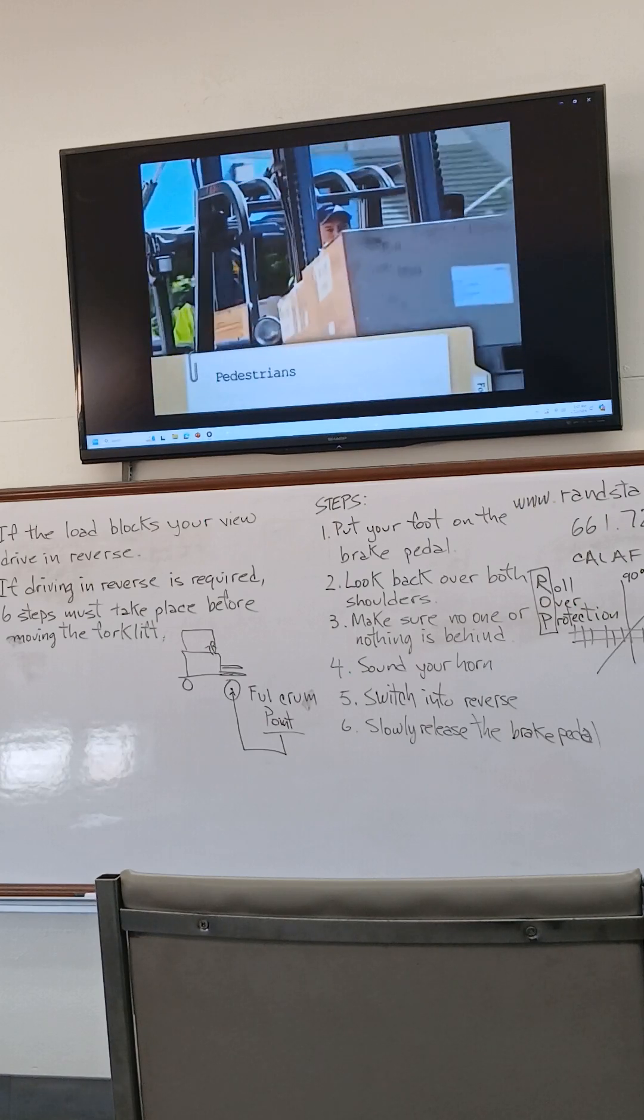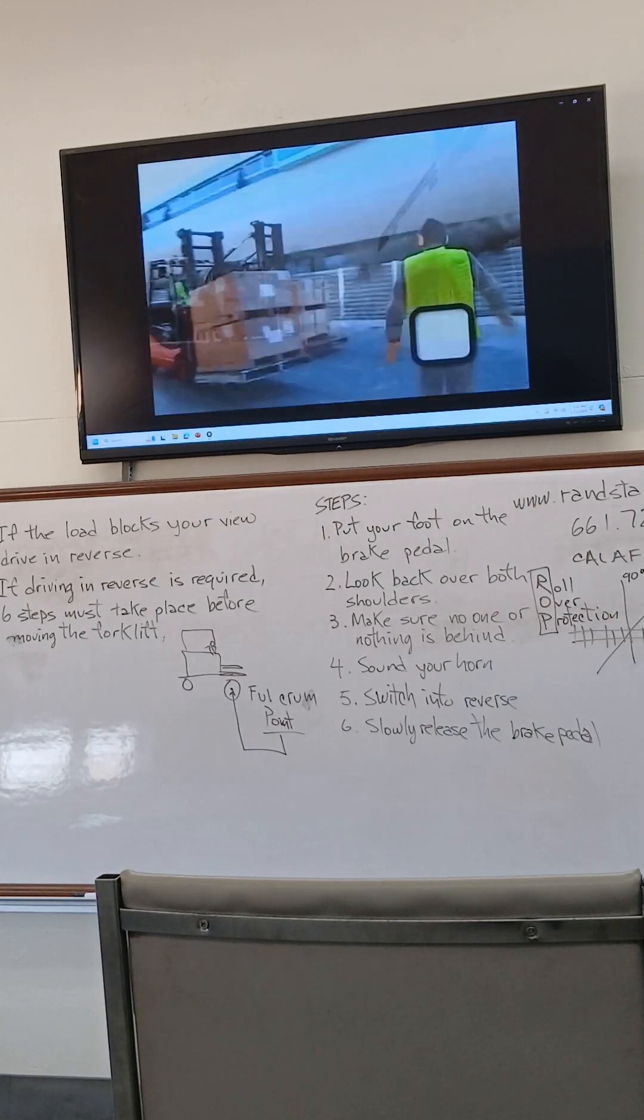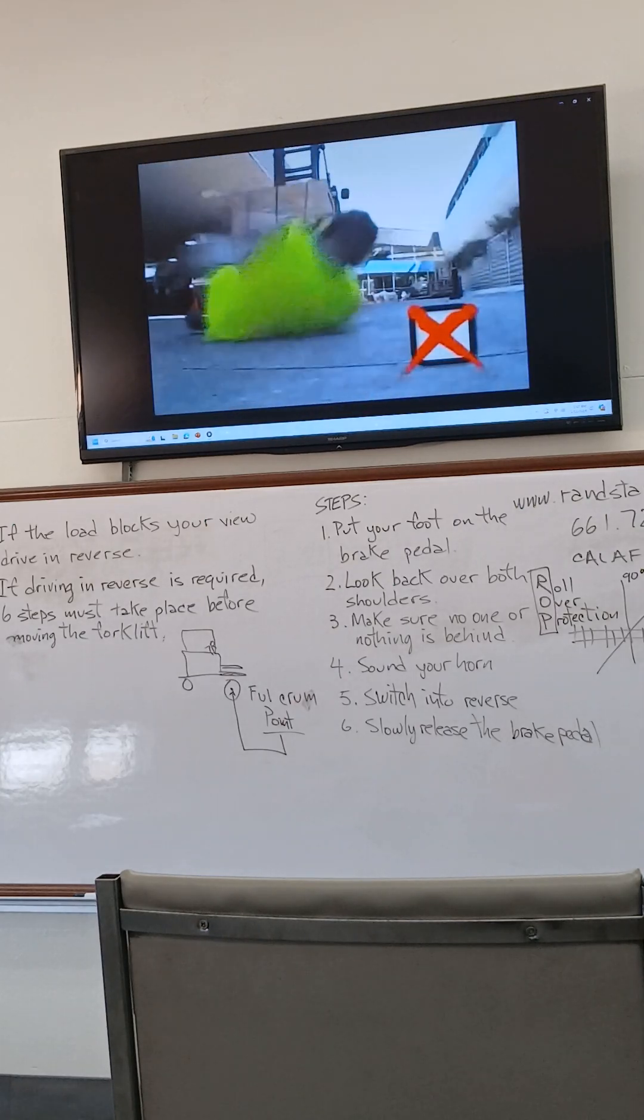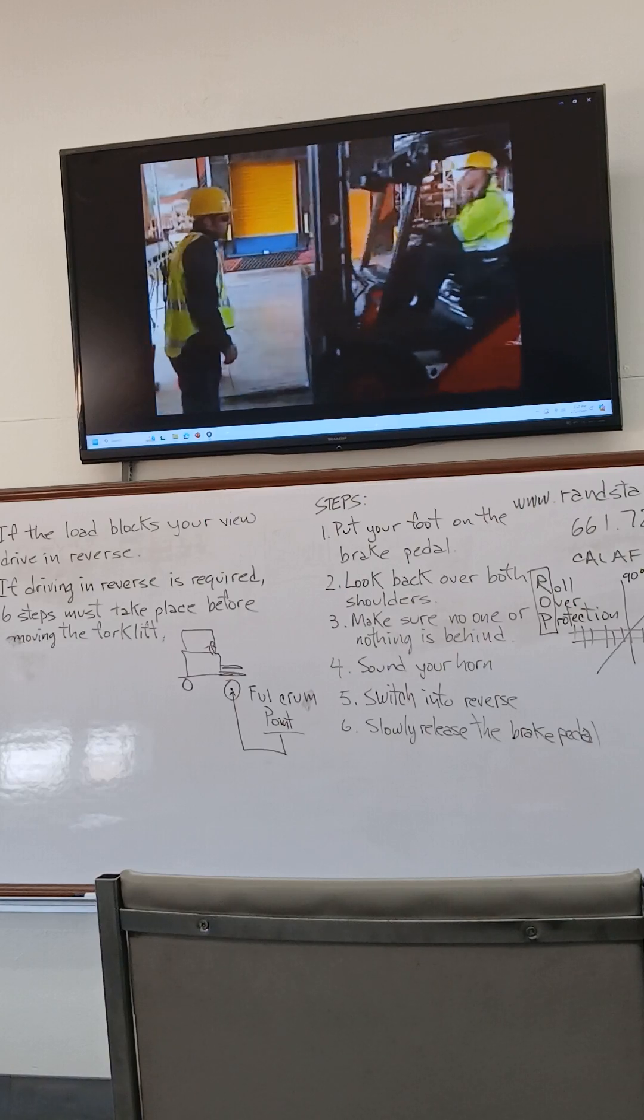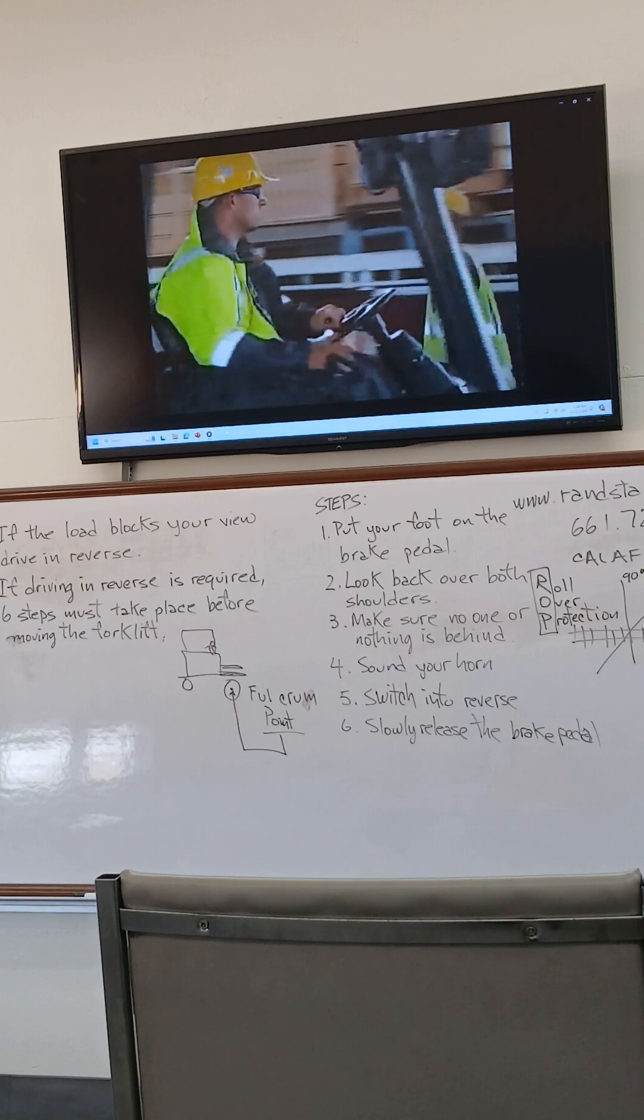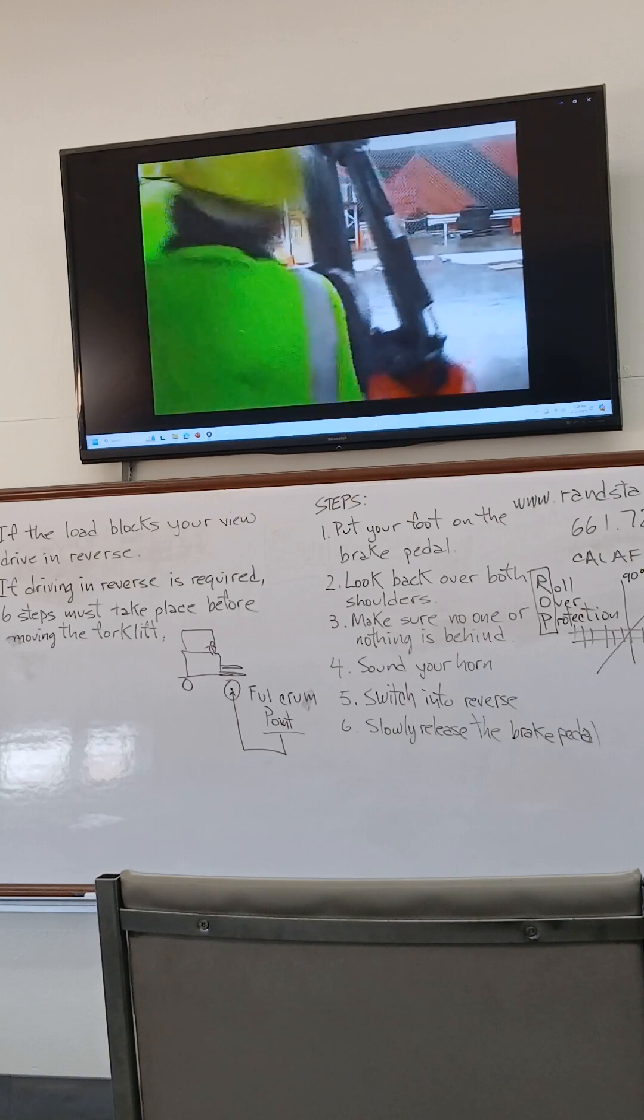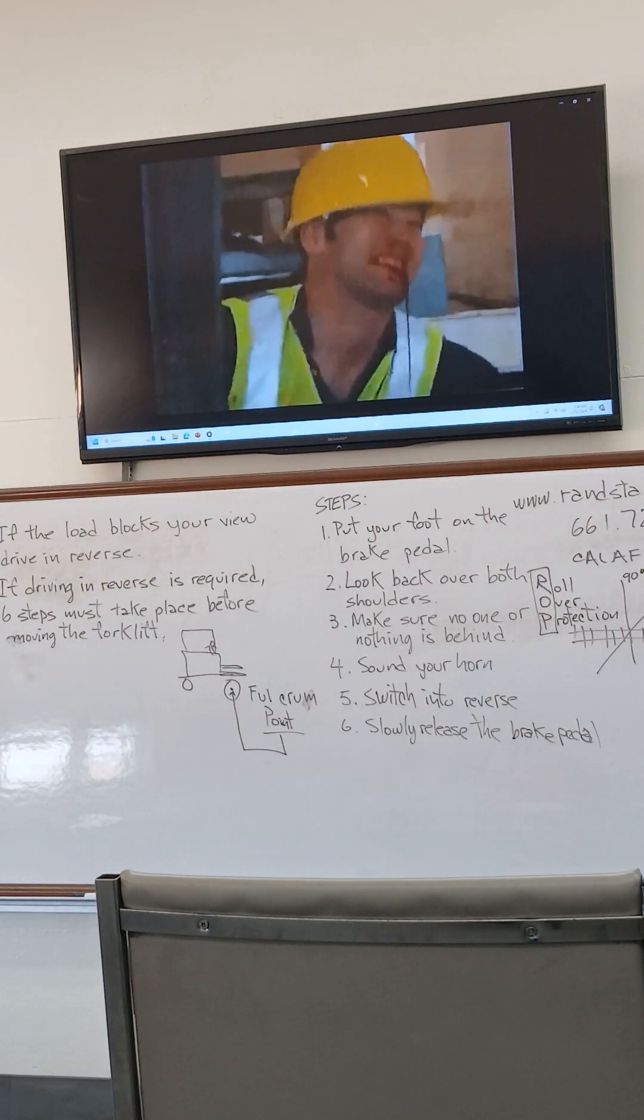A large number of injuries and fatalities result from forklifts and loads colliding with, falling on, or crushing pedestrians. Even at low speeds, an unexpected movement of a forklift can crush a bystander against a fixed structure or another vehicle.